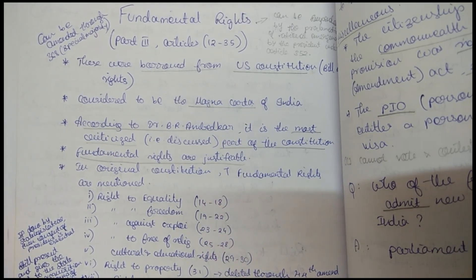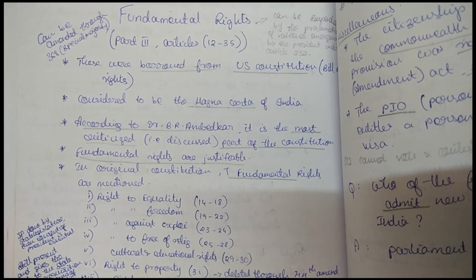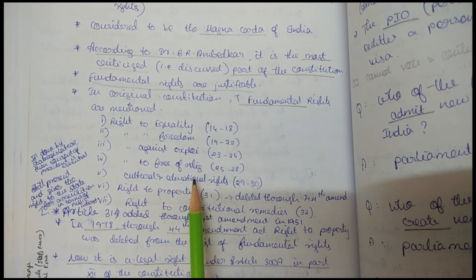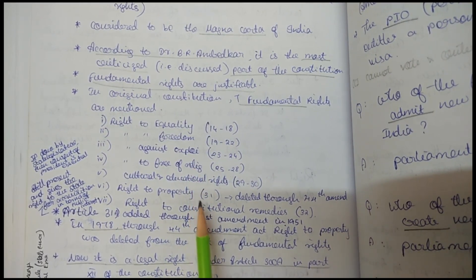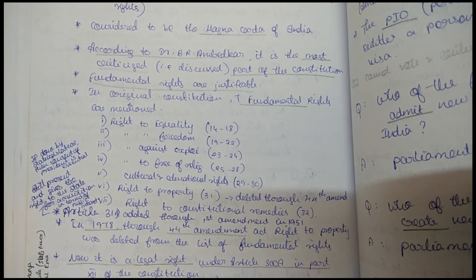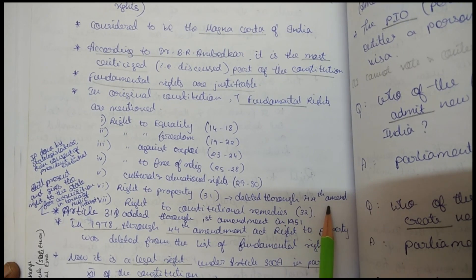In the original constitution, we had 7 fundamental rights: right to equality, right to freedom, right against exploitation, right to freedom of religion, cultural and educational rights, right to property, and right to constitutional remedies. Currently we have only 6 fundamental rights because the right to property was removed through the 44th Amendment, 1978.